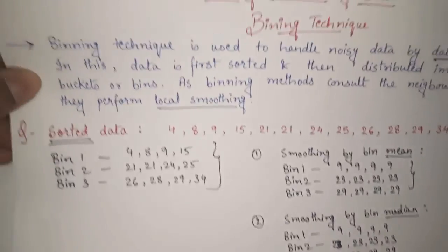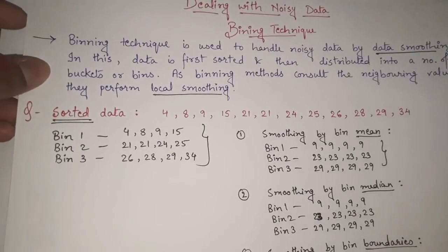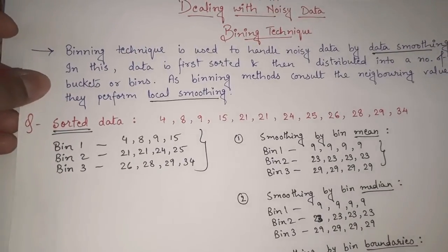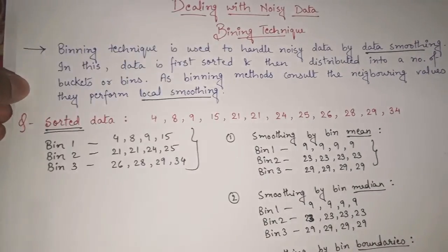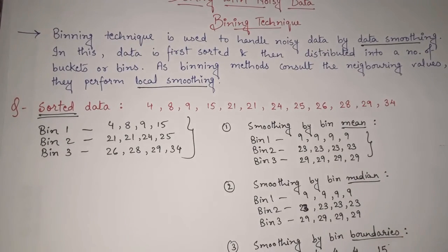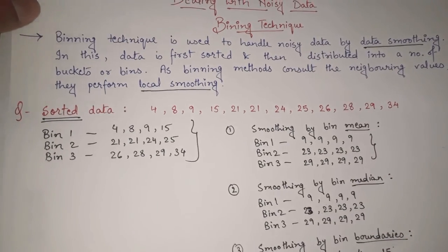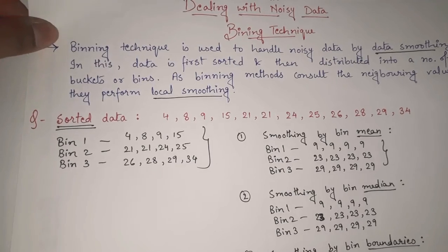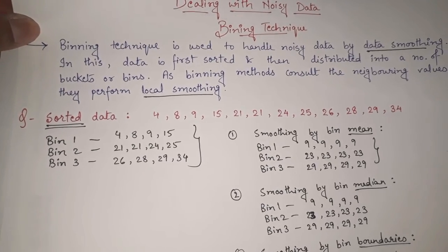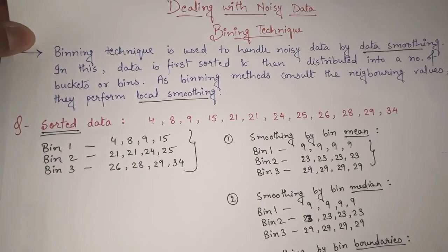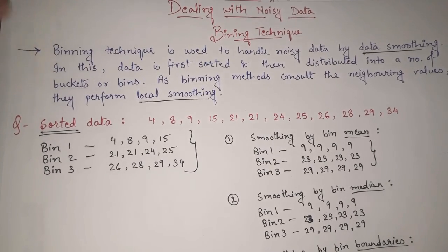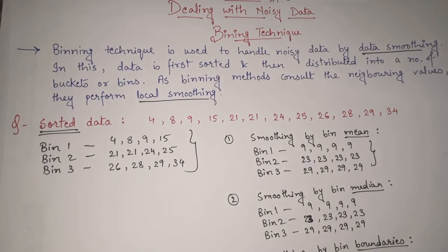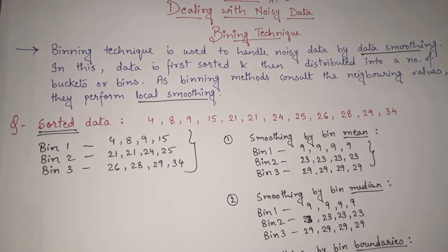So these are the three ways used for smoothing in the binning technique. I hope you have understood all three properly. Practice some more examples and you will get a much clearer idea. In case you still have any doubts, you can always ask in the comment section. Thank you so much.